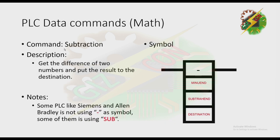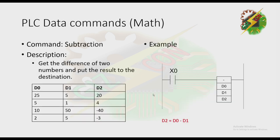Next we have Subtraction — it gets the difference of two numbers and puts the result to the destination. This is the symbol for this command. If X0 is energized, the value of D0 will be subtracted by D1 and the result will be moved to D2.